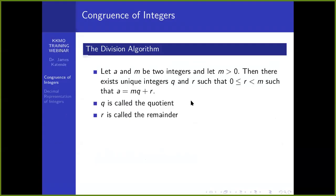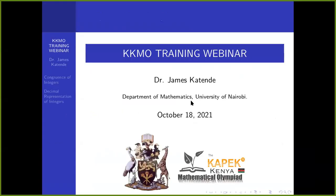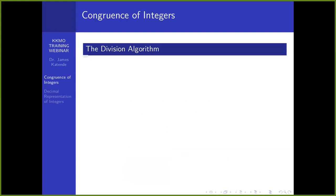For those who may not know me, my name is Dr. Katende, James Katende from the University of Nairobi, Department of Mathematics. I'm part of the team that runs the CAPEC Kenya Mathematical Olympiad, and it is sponsored by the CAPEC instruments — they sell some geometrical sets and calculators as well. Today we'll be covering modular arithmetic, and to start us off, we'll be looking at congruence of integers.